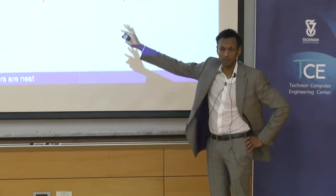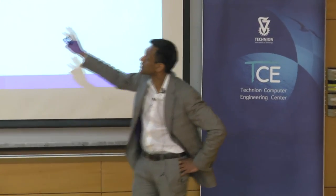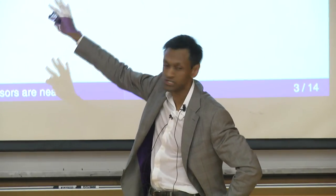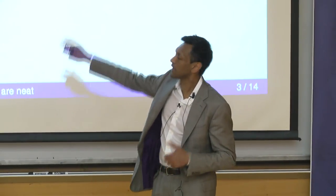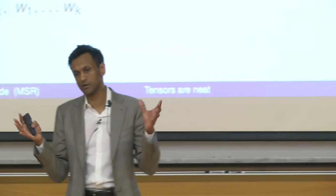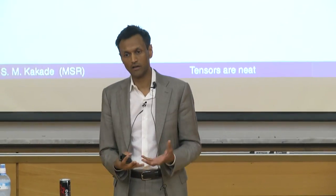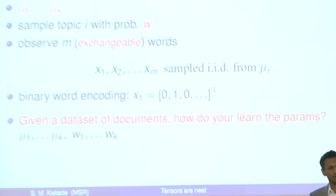Let's start with the single topic model — forget about documents having multiple topics. Every document has one topic. How do we sample words in the document? Say there are k topics in the world and d words in our language. We randomly pick a topic from some distribution, and then sample m words independently from the same topic. The key point is every word is sampled independently from the topic, so we're ignoring word order — treating it as a bag of words. Our dataset consists of multiple documents.